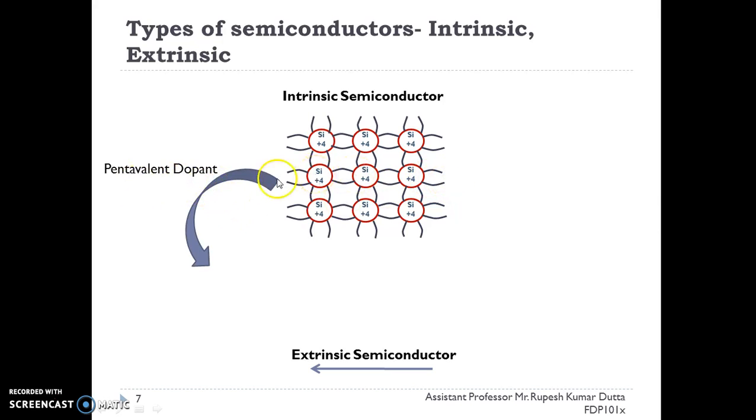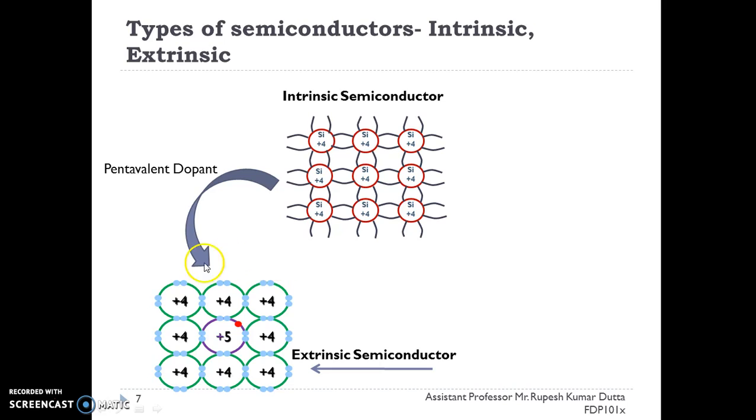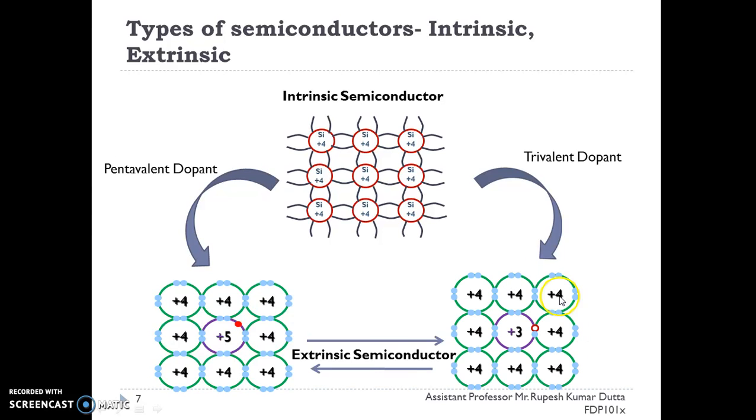To have applications of semiconductors, we need to dope it with either pentavalent or trivalent materials. If we dope it with pentavalent dopants then we get a semiconductor having majority carriers as electrons, and if we dope it with trivalent materials then we will get a semiconductor having majority as holes.